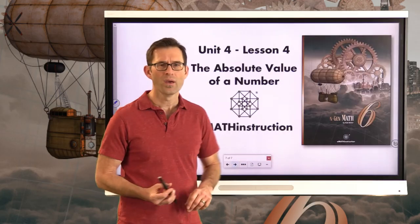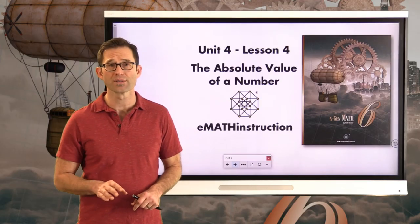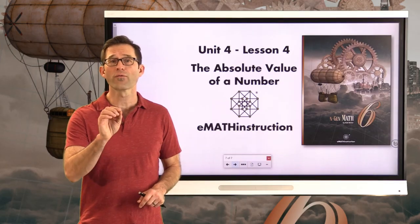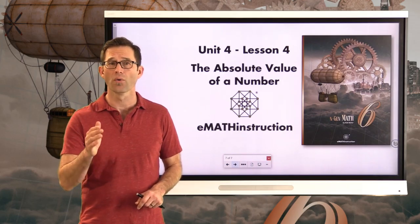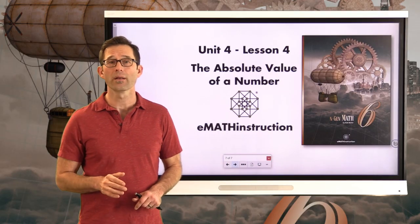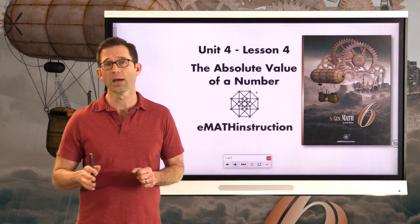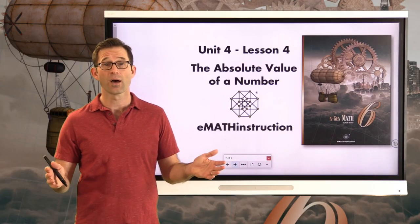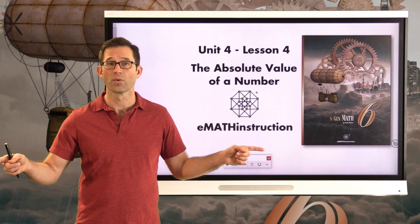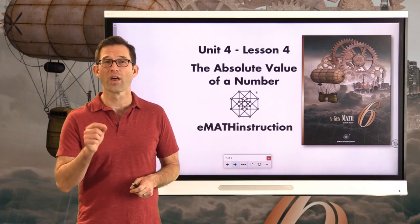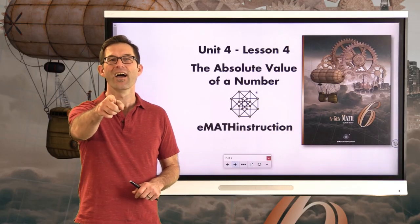Let's wrap this up. You saw the important idea of absolute value for the first time. Absolute value can be interpreted two ways: the distance a number is from zero when plotted on a number line — and since distance is always positive, absolute value is always positive, with the exception of zero — or the size of a number regardless of sign. The absolute value of negative 50 and the absolute value of 50 are exactly the same: 50. The sign simply tells you whether the number lies to the right or left of the origin. Thank you for joining me for another NGen Math 6 lesson by EMath Instruction. My name is Kirk Weiler — keep thinking and keep solving problems.